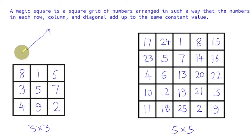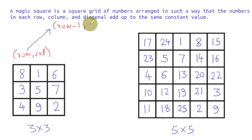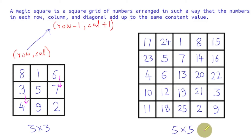Notice that if you are at any given cell, say cell (row, col), and you try to move up and right, this means row is decremented and column is incremented. Another thing to notice is that while filling the numbers, once you reach a number which is a multiple of the size, the next number is placed one cell down. For example, in a 3 by 3 magic square, once you reach 3 — which is a multiple of 3 — you move down. Once you reach 6, you move down to 7.